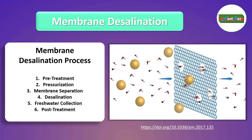In membrane desalination, specifically in the context of reverse osmosis desalination, the following procedures occur. Pre-treatment: before water enters the RO system, it goes through pre-treatment to remove larger particles, sediments and other impurities. This pre-treatment helps protect the RO membrane from fouling and damage.